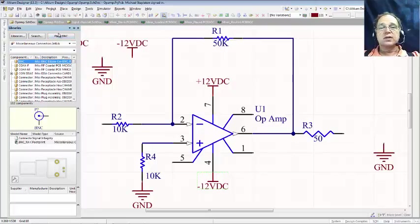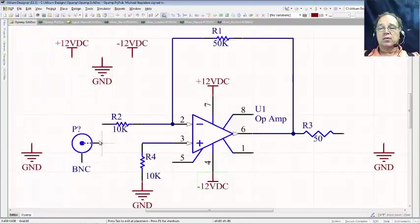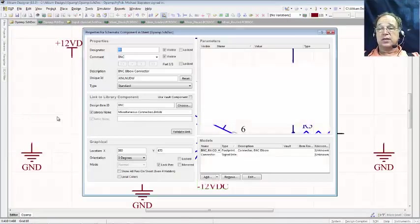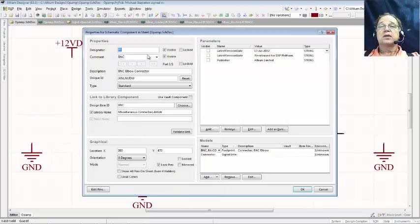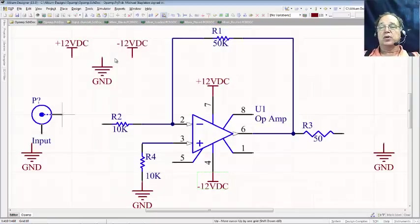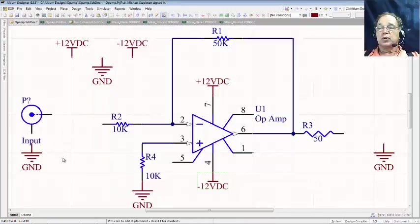So we're going to come up just like we did on other schematic parts. Place BNC. There it is. And now what are my options here again? Same thing. I can hit tab before I place it and say, yeah, I want that to be visible. And I'm going to call it INPUT. Very nice. And I'll place it right here. We'll adjust that later.